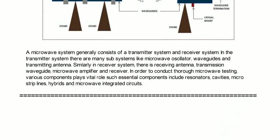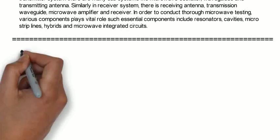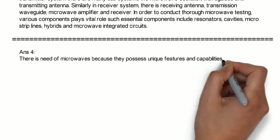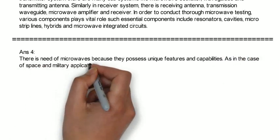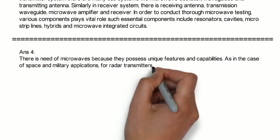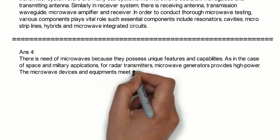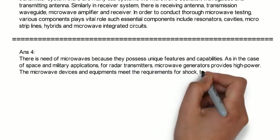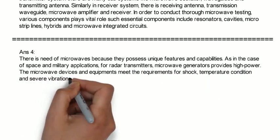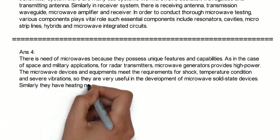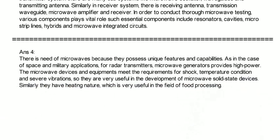Now we will study fourth question. Why there is need of microwaves? There is need of microwaves because they possess unique features and capabilities. As in the case of space and military applications, for radar transmitters, microwave generators provide high power. The microwave devices and equipment meet the requirements for shock, temperature conditions and severe vibrations. So they are very useful in the development of microwave solid state devices. Similarly they have heating nature which is very useful in the field of food processing.